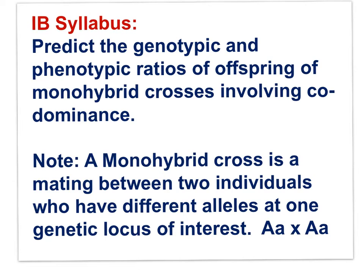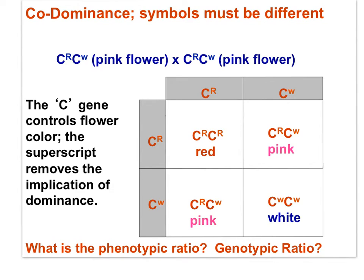In the next slide we'll look at a monohybrid cross involving codominance. Both individuals are heterozygous, and with codominance as the heredity pattern, both heterozygous parents are phenotypically pink. Their offspring shown in the Punnett square give a phenotypic ratio of one red, two pink, and one white. The genotypic ratio is left to you.